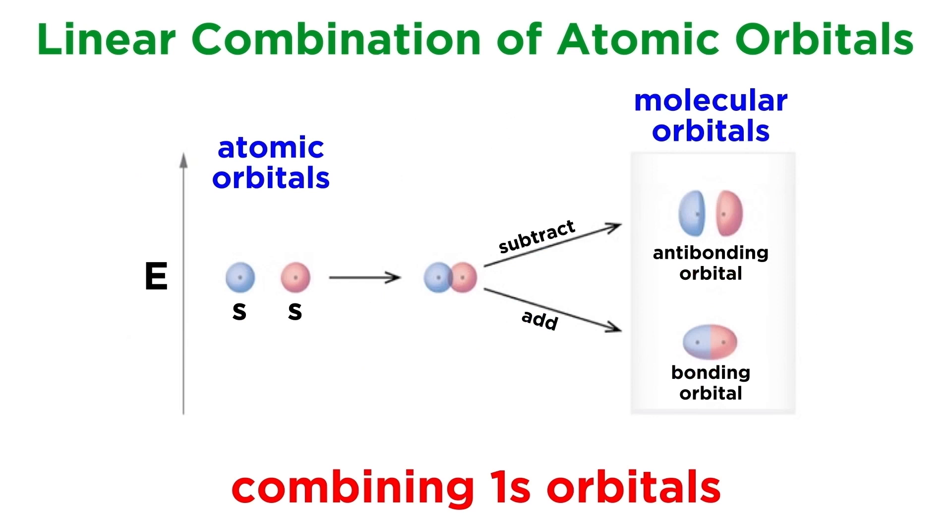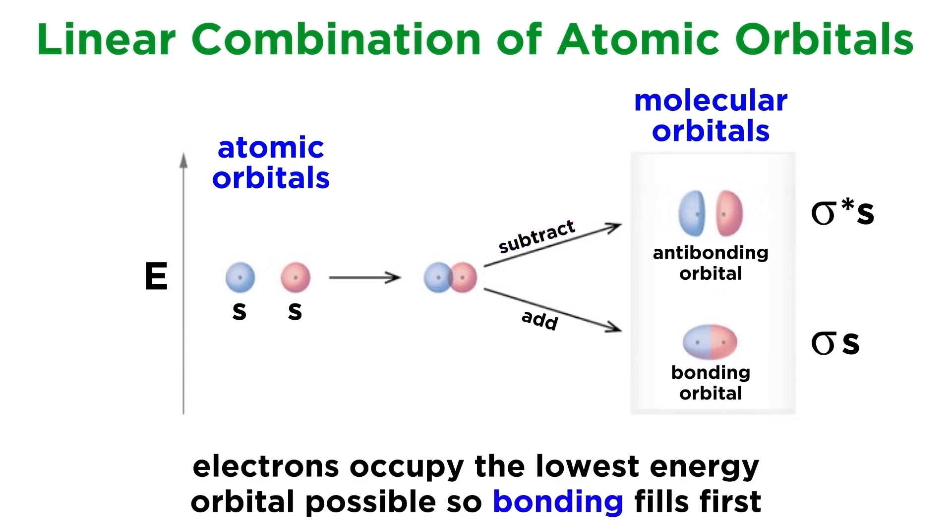When the two 1s orbitals from two hydrogen atoms overlap to form a hydrogen molecule, they will produce two molecular orbitals. The in-phase combination produces a lower-energy sigma-s bonding orbital. The out-of-phase combination, which essentially subtracts the wave functions, produces a higher-energy sigma-s star antibonding orbital, which has a node between the nuclei. Electrons will occupy the lowest energy orbital available, which is why the two electrons in this bond will reside in the bonding orbital.